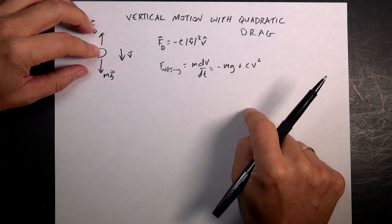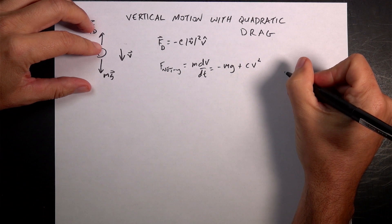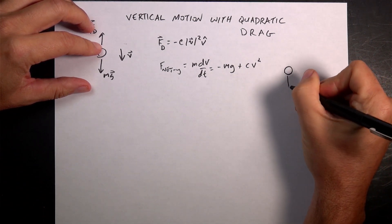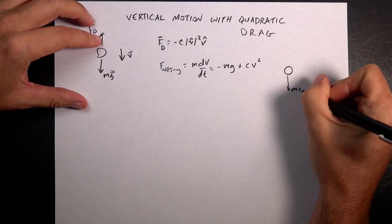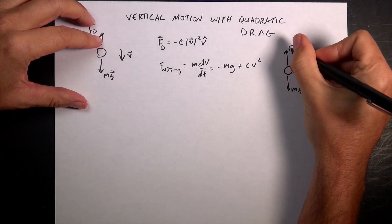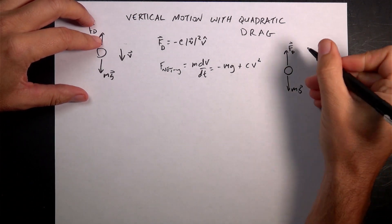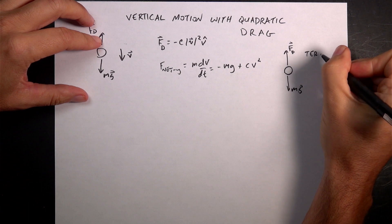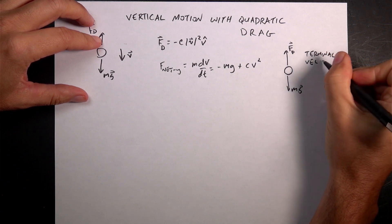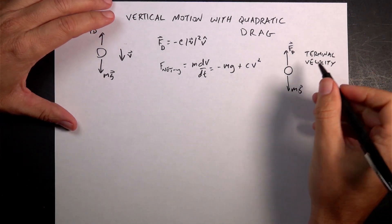But now we have this constant term in here that really does mess things up. So we did this trick with linear drag, and we can use a similar trick. So let's think about an object that's fallen for a long time. And so it has a gravitational force, Mg, and a drag force, Fd. And these two are equal, so it's moving at a constant speed, and we call that terminal velocity.